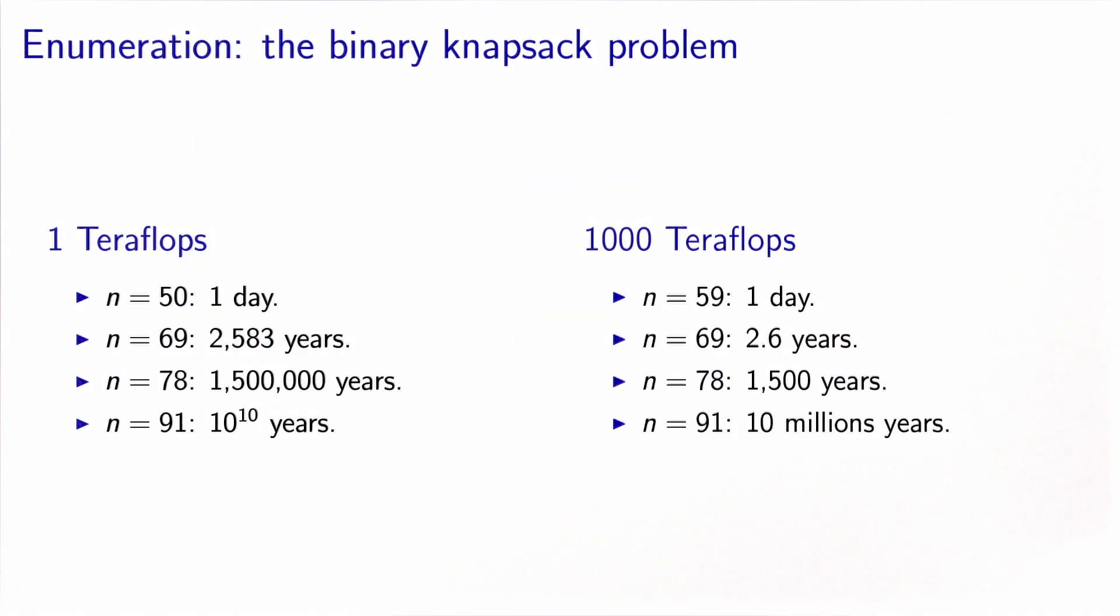You have probably heard about Moore's law that says the computing power of computers basically doubles every two years. So let's take the extreme case where our processor, which is 1 teraflops, has its capacity multiplied by 1,000. We use a 1,000 teraflops processor. But in that case, if I put the limit to one day of calculation, before I was able to solve a problem with 50 items, but with my new processor which is 1,000 times faster, I can only solve a problem with 59 items.